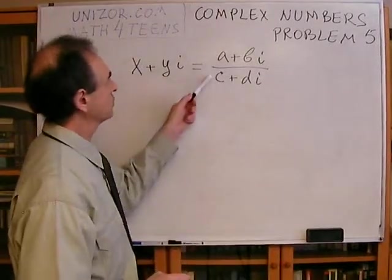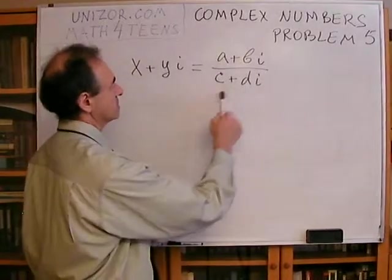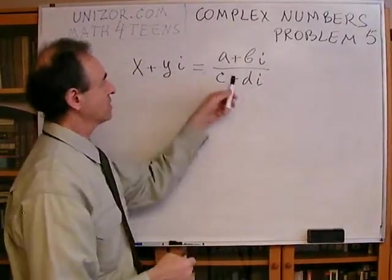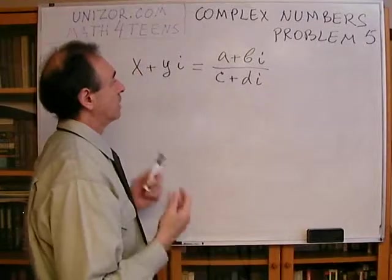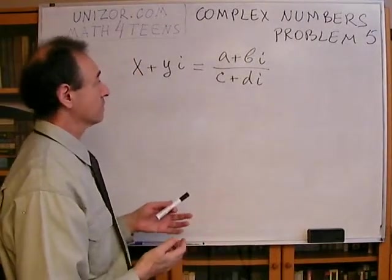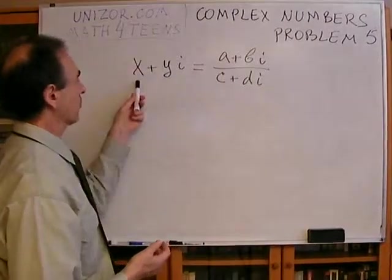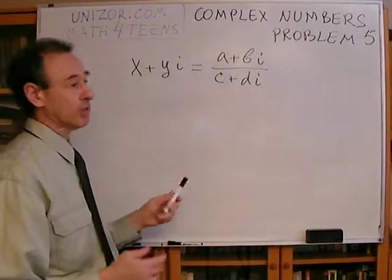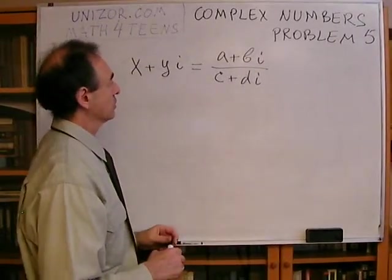If you have two different complex numbers, A plus B I and C plus D I, where A, B, C, and D are real numbers, I would like to represent the result of this division as a complex number with X and Y real numbers. And the question is, how can we do it?